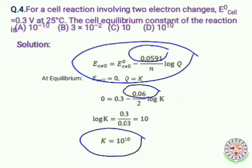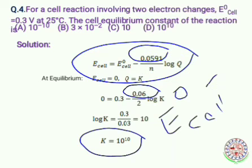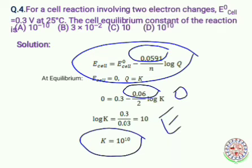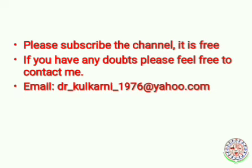Remember: E° cell = (0.0591 / n) × log K at 298 K — this equation is essential. I listed it in the second slide. Hope you enjoyed my video. Please subscribe to the channel — it is free. If you have any doubts, feel free to contact me. My email ID is dr_kulkarni_1976.